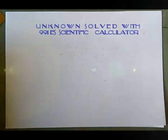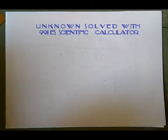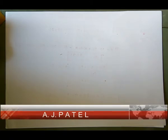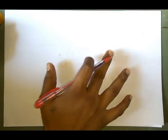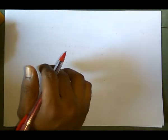Hello friends, today we are going to see how we can solve two unknowns with the help of a calculator — any of the calculators, 991ms or 991es natural display. The 991es is more suitable because it has natural display, so it looks like writing on paper.